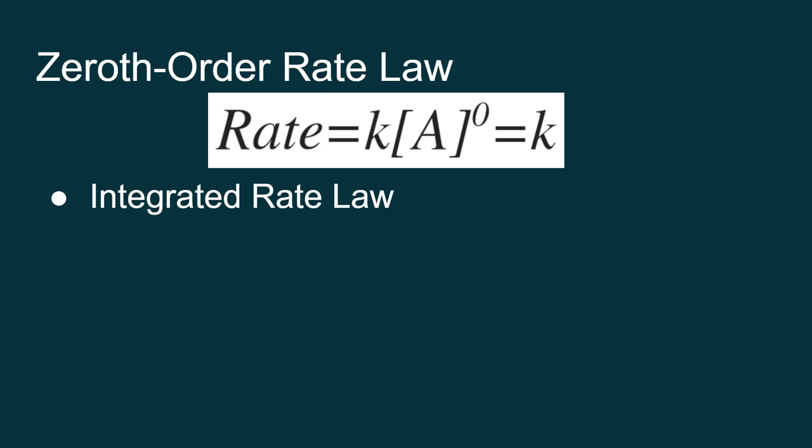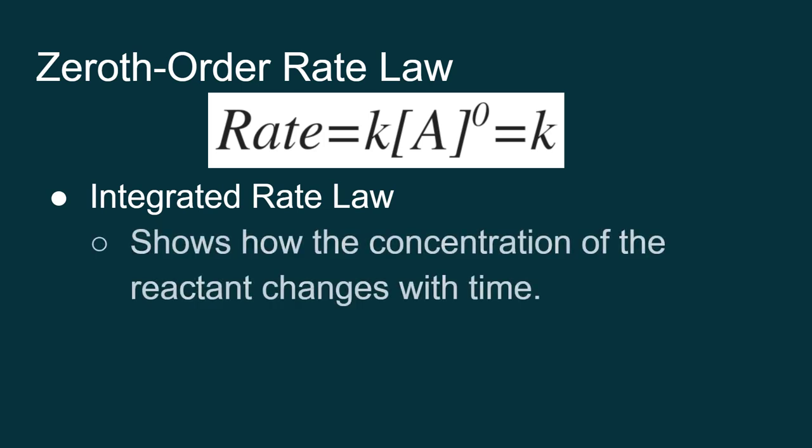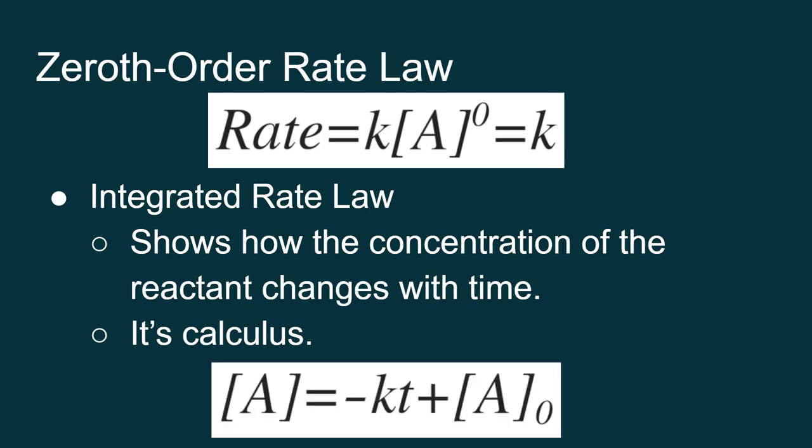I want to look at this rate in terms of what's called an integrated rate law. An integrated rate law shows how the concentration of the reactant will change with time. It's called an integrated rate law because it's calculus — the rate is the change in concentration over time, or the first derivative of concentration with respect to time. If we integrate that over a range from the initial concentration to the final concentration, we get a new equation. For a zeroth order reaction, the integrated rate law shows that the concentration of A at any time equals the negative value of the rate constant times time, plus whatever the initial concentration was. That initial concentration is written as A sub zero or A naught.